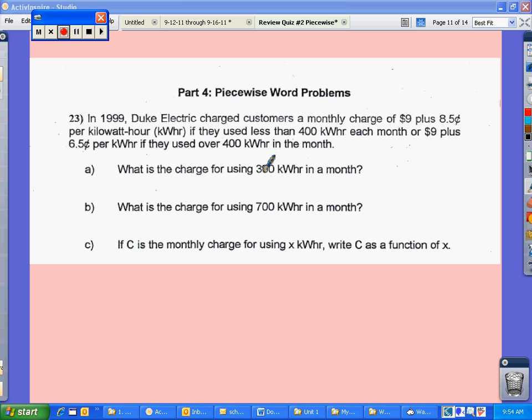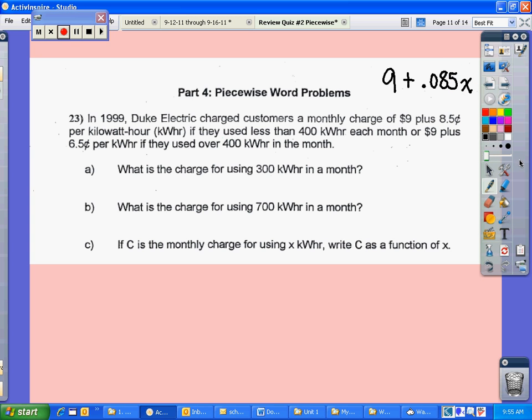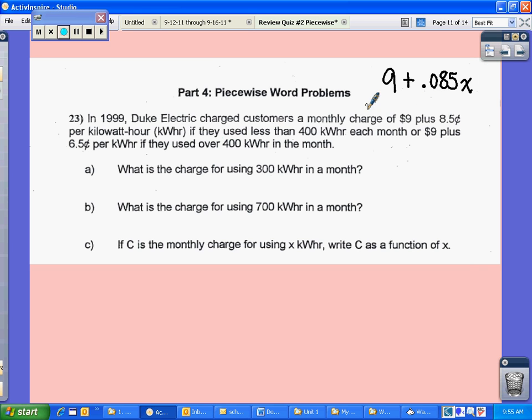So what is the charge for using 300? So which one are you going to do? You're going to first have to set up a piecewise function for this. So you first have a monthly charge of $9 plus 8.5 cents. And we write 8.5 cents as .085. And then X per kilowatt hour. And that's for values that are between 0 and 400. So between 0 is less than or equal to X is less than 400. And that's where 300 falls in.